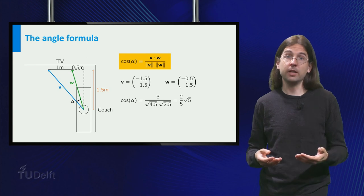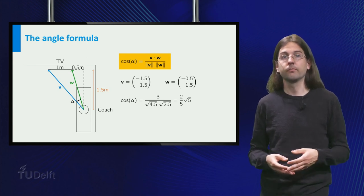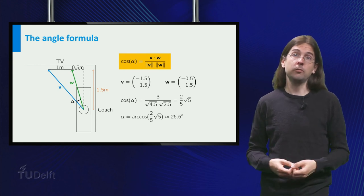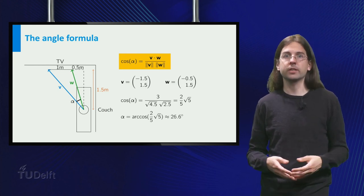which simplifies to 2/5 times square root 5. Taking the inverse cosine, we see that alpha equals roughly 26.6 degrees.